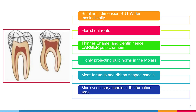Primary teeth are smaller in dimension but wider mesiodistally. They have flared-out roots to accommodate the erupting permanent tooth beneath. They have thinner enamel and dentine, meaning the pulp chamber is larger — which is why the bur drop comes faster during pulpectomy therapy compared to adult teeth. They also have higher projecting pulp horns in the molars, more tortuous and ribbon-shaped canals, and more accessory canals at the furcation area.